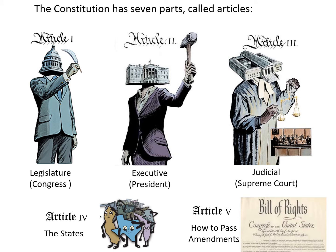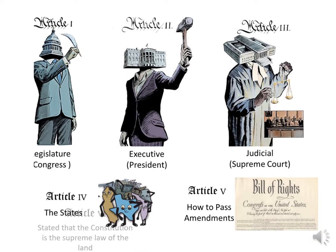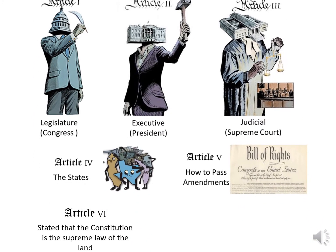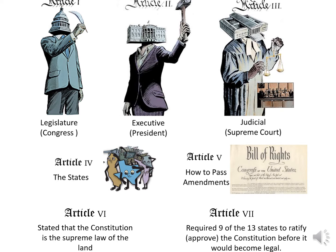There's also Article 4 concerning the states, and Article 5, how to pass amendments. There's Article 6, which states that the Constitution is the supreme law of the land. And finally, Article 7, which tells how the Constitution became legal.